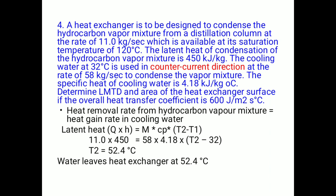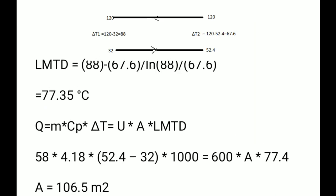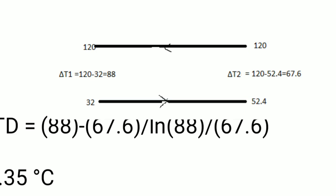The heat gained by the water equals the latent heat released by the hydrocarbon mixture. Latent heat Q = m·L = 11 × 450 = 4950 kW. This equals m·c·ΔT for the water: 58 × 4.18 × ΔT_water. Solving gives the water outlet temperature as 52.4°C.